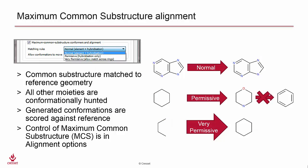On the other hand, if we are working with a concentric series and wish to have a specific common moiety forced together in the alignment, we can use the maximum common substructure option in the alignment.